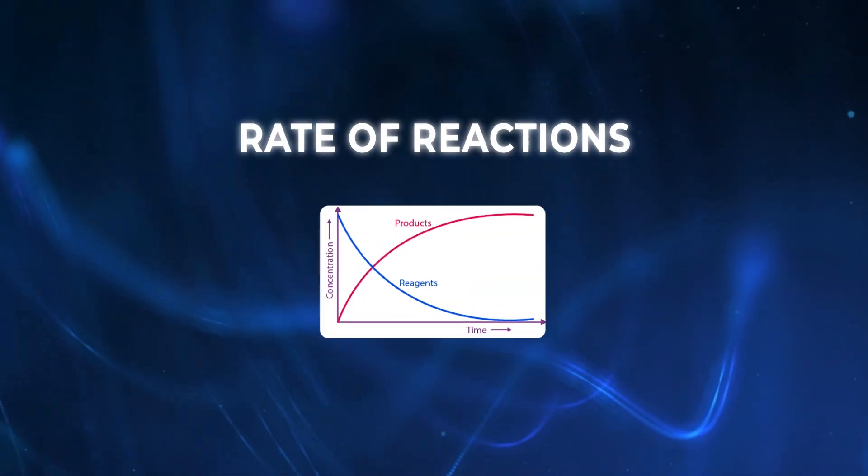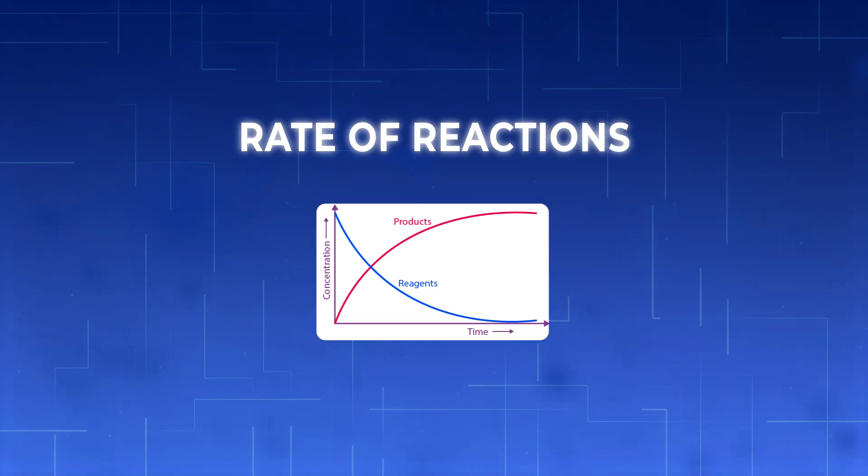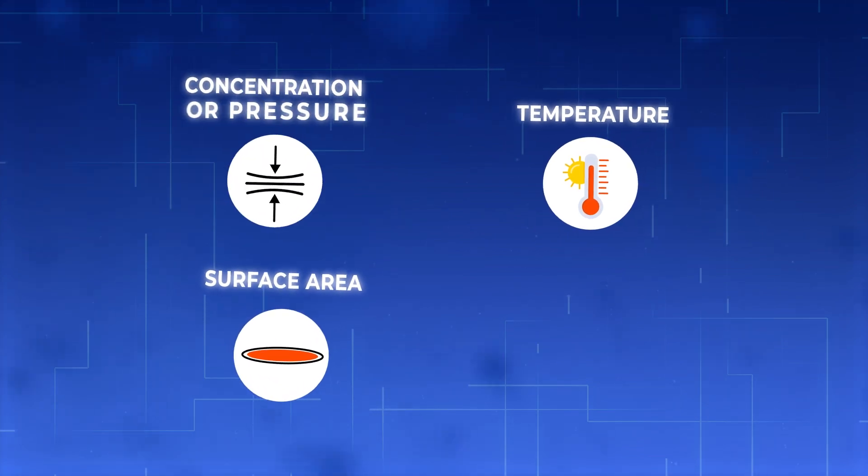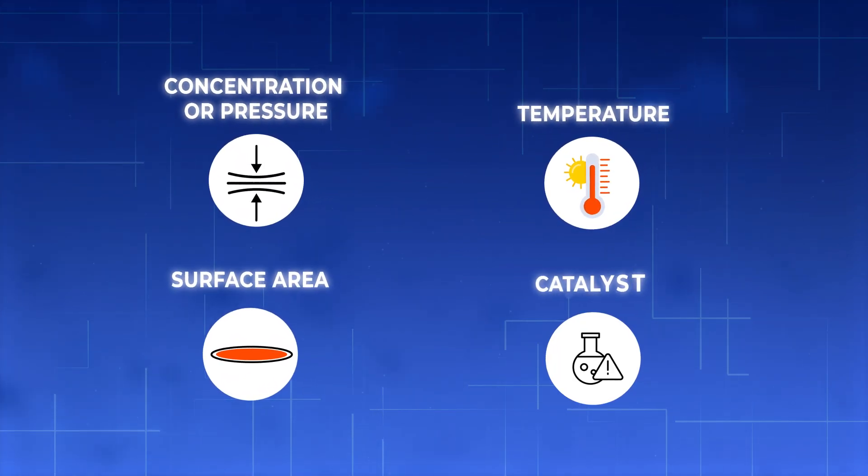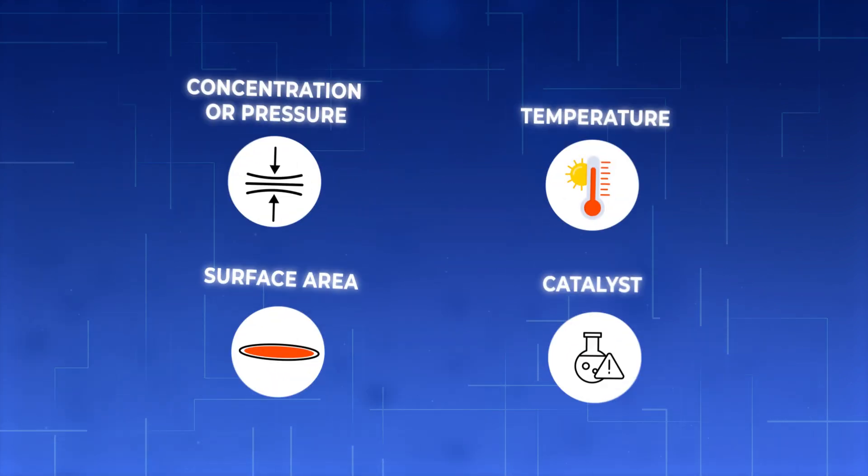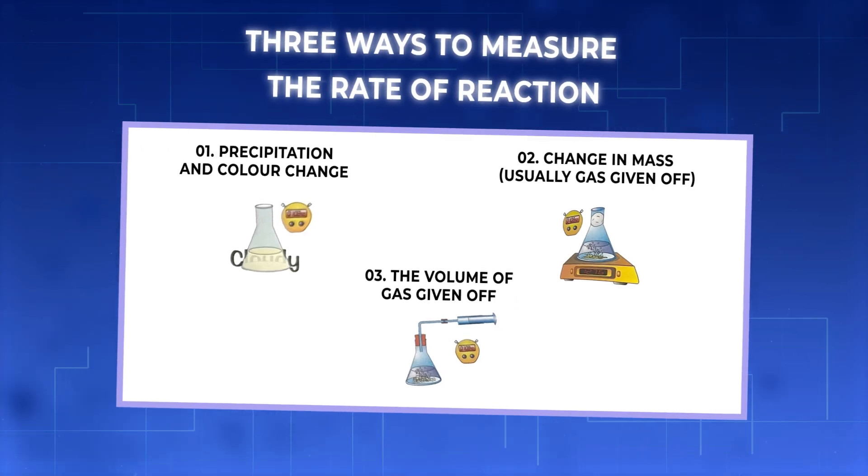The first topic is rate of reactions. Make sure you know the four things that the rate of reaction depends on, which is temperature, surface area, concentration or pressure and a catalyst. Tell me in the comments the difference between concentration and pressure. Also know the three ways to measure a rate of reaction.